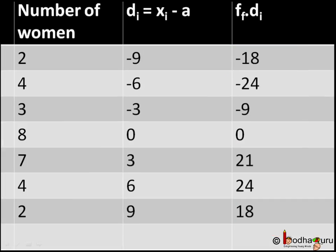Now we multiply di with its respective fi. So for the first row, 2 × (−9) = −18. For the second row, 4 × (−6) = −24, and so on.